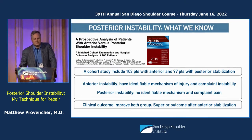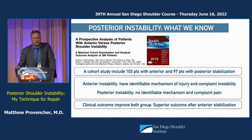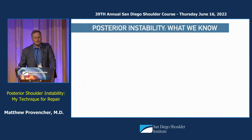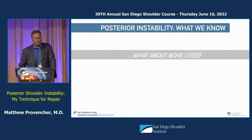When we looked at the difference between anterior versus posterior instability — a hundred anteriors and a hundred posteriors — anterior patients mostly had a dislocation or subluxation, while posterior instability patients said they did a lot of benching, lifting, or had an injury playing football or wrestling. The outcomes were overall pretty reasonable once they were repaired arthroscopically with a matched cohort.